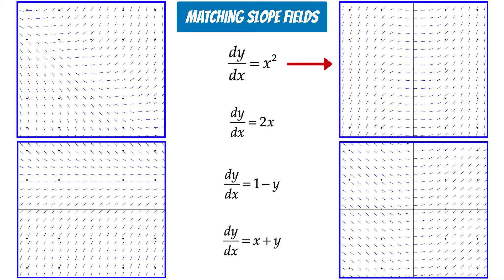The next differential equation is dy/dx equals 2x. The solution to this will be an x squared function. And the slope field that matches an x squared shape is in the lower right corner.